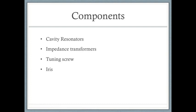An iris is a thin metal plate across the waveguide with one or more holes in it. It is used to couple together two lengths of waveguide and is a means of introducing a discontinuity.